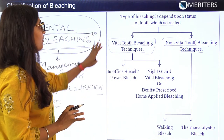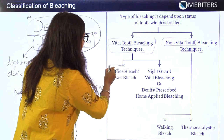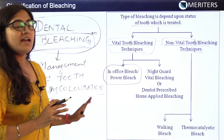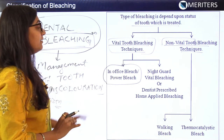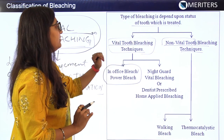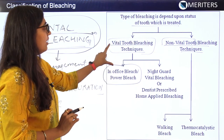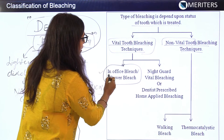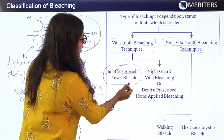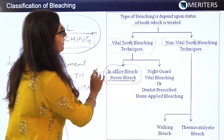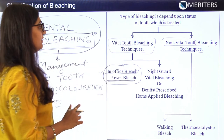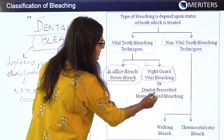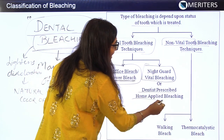Vital tooth bleaching technique is further divided into two types — the names are very important because exam questions may use these names directly without specifying it is a vital tooth bleaching technique. The first is in-office bleach, also known as power bleach technique. The second is night guard vital bleaching technique, also known as dentist prescribed home applied bleaching technique.